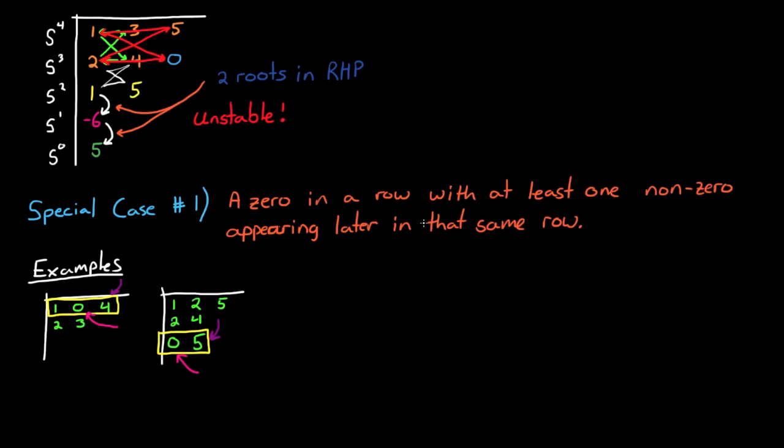Now when this occurs, the system is always unstable, because completing the routh array will always result in a sign change of the first row. And so if you're only attempting to assess stability of the system, then you don't need to complete the rest of the table at this point.